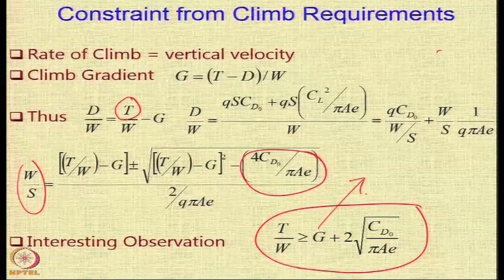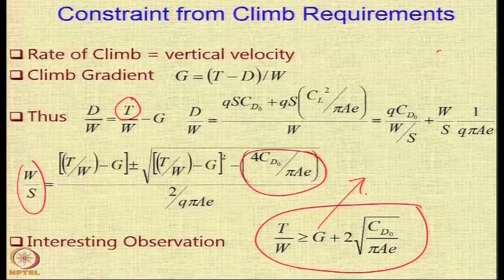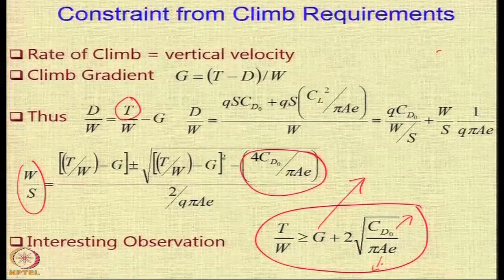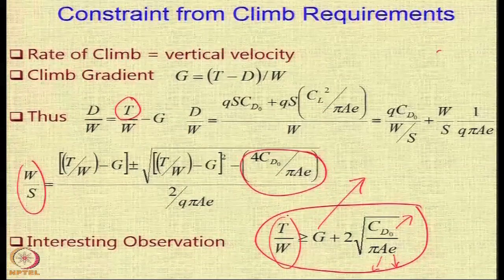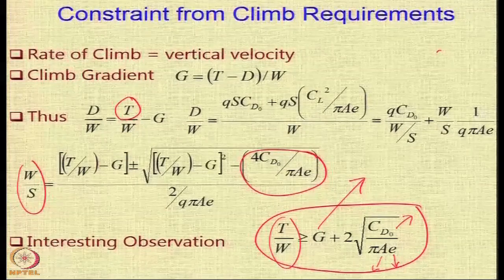If the climb gradient is specified — say 2% or 4% — and if C_D0 is known and the aspect ratio is known so that E (Oswald efficiency) can be estimated, then a minimum value of T/W will automatically be estimated using this expression.